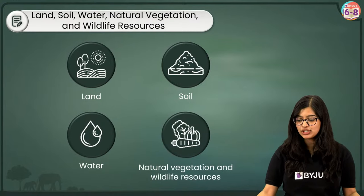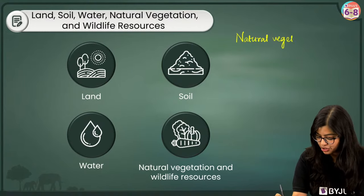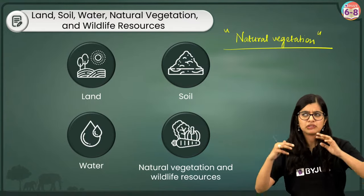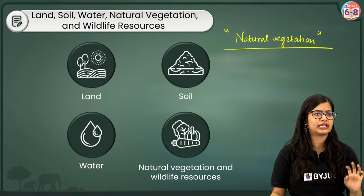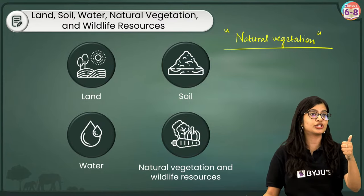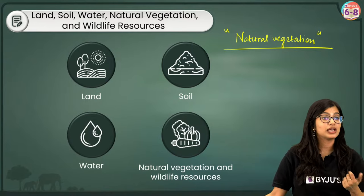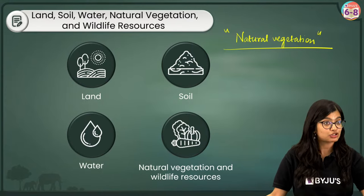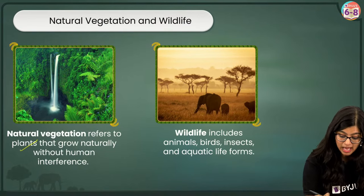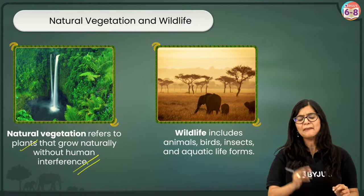Now we will learn about natural vegetation and wildlife. If I use the word 'natural vegetation' — vegetation is a word we've heard in lower grades. When I say natural vegetation it refers to plants that grow naturally without any human interference. Things that grow by themselves, created by nature — flora, forest. That is what we understand by natural vegetation.